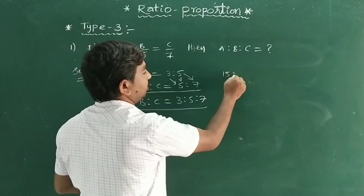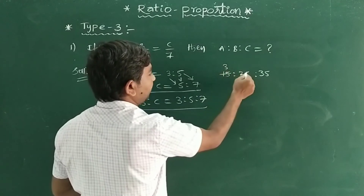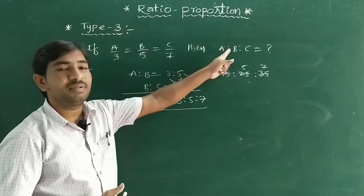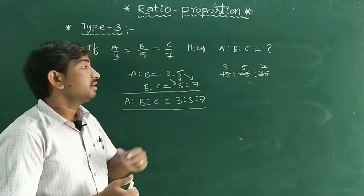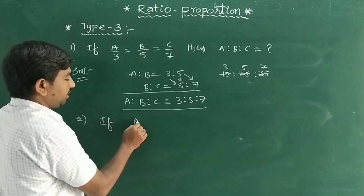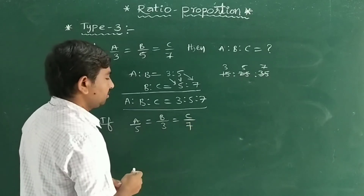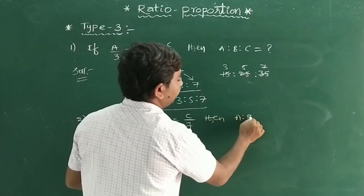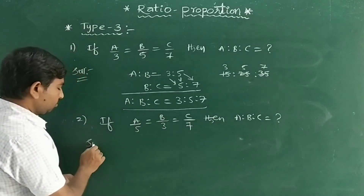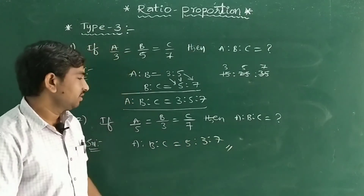So the direct answer is A:B:C = 3:5:7. For a second example, if A/5 = B/3 = C/7, then A:B:C = 5:3:7 directly. Very easy — just read the denominators in order for the ratio.